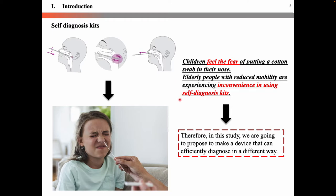COVID-19 can act as a very deadly virus for children and elderly people who have a weak immune system compared with adults. Therefore, we have to overcome this obstacle in the diagnosis process so that it can be identified quickly and action can be taken accordingly. So in this study, we propose to make a device that can efficiently diagnose, different from the self-diagnosis kit.